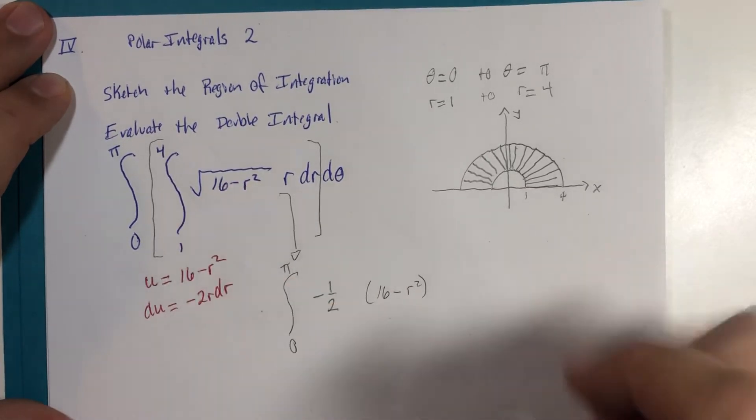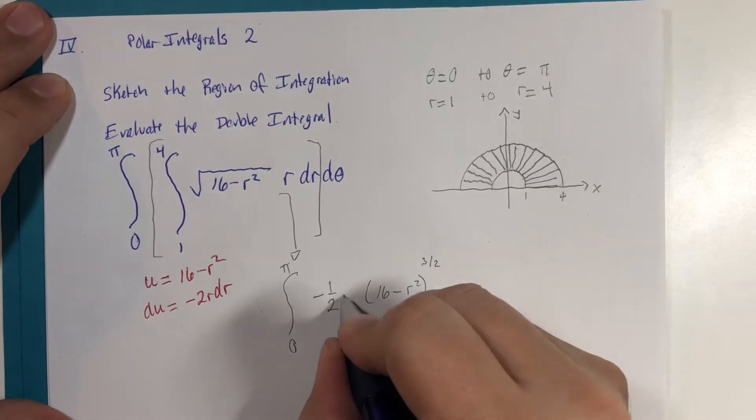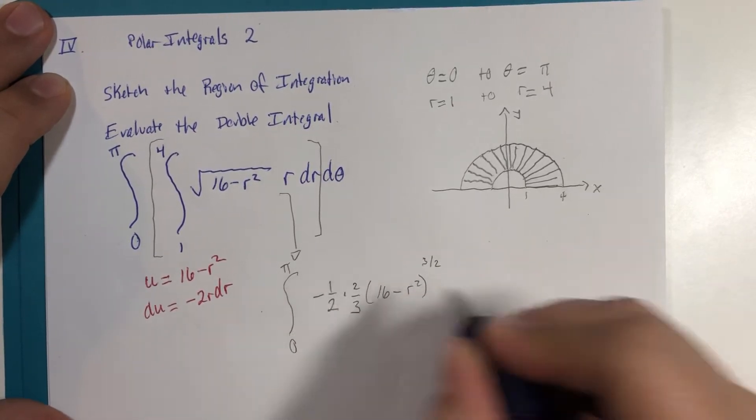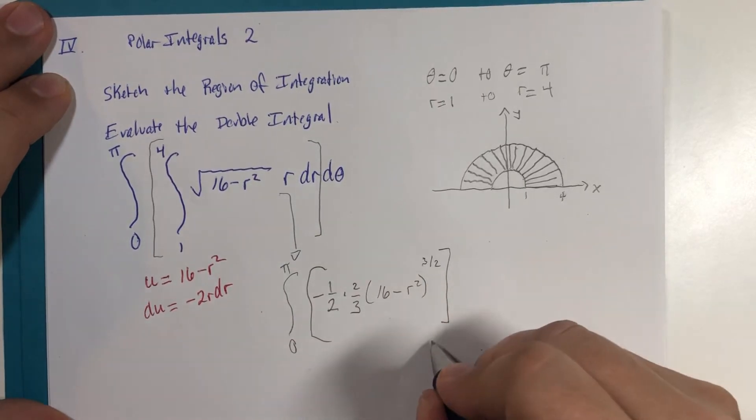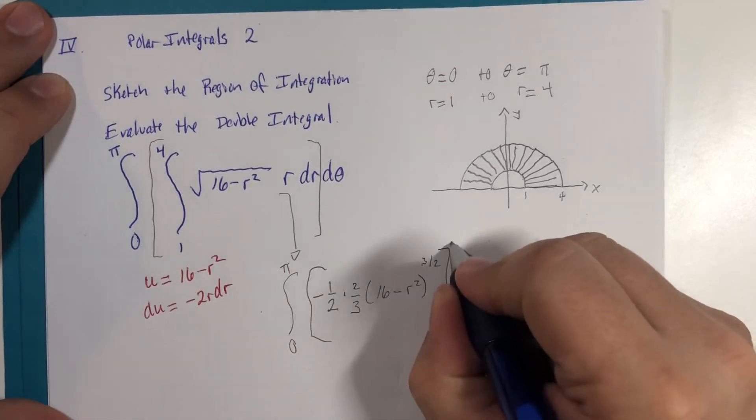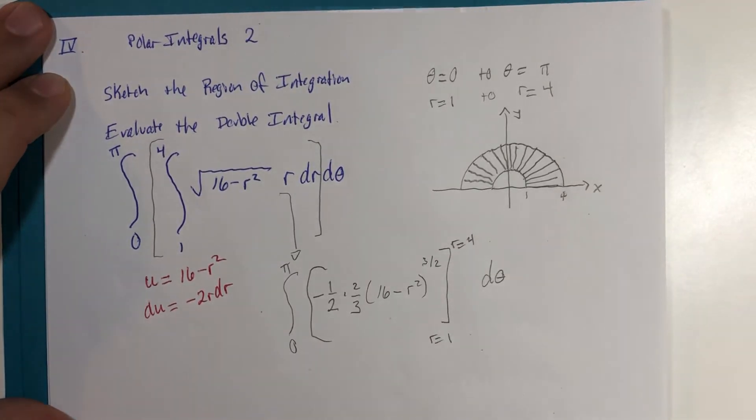The square root will be—add one to the exponent—to the three halves power, multiplied by two thirds, two thirds. And then we're going to evaluate that from r equals one to r equals four, and then later we will integrate with respect to theta.